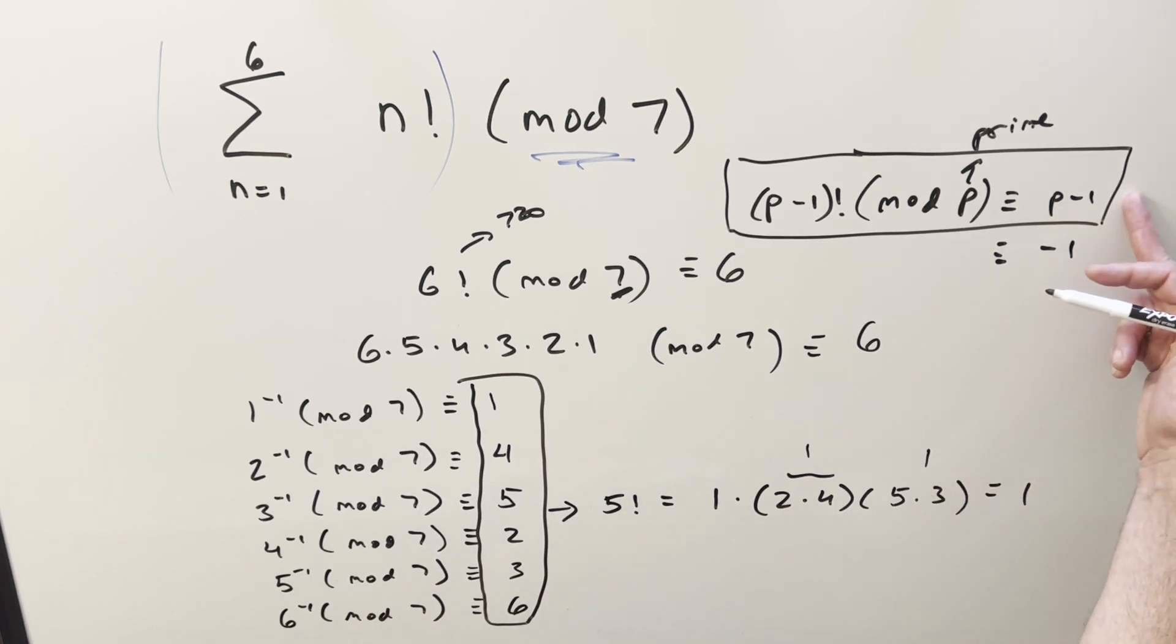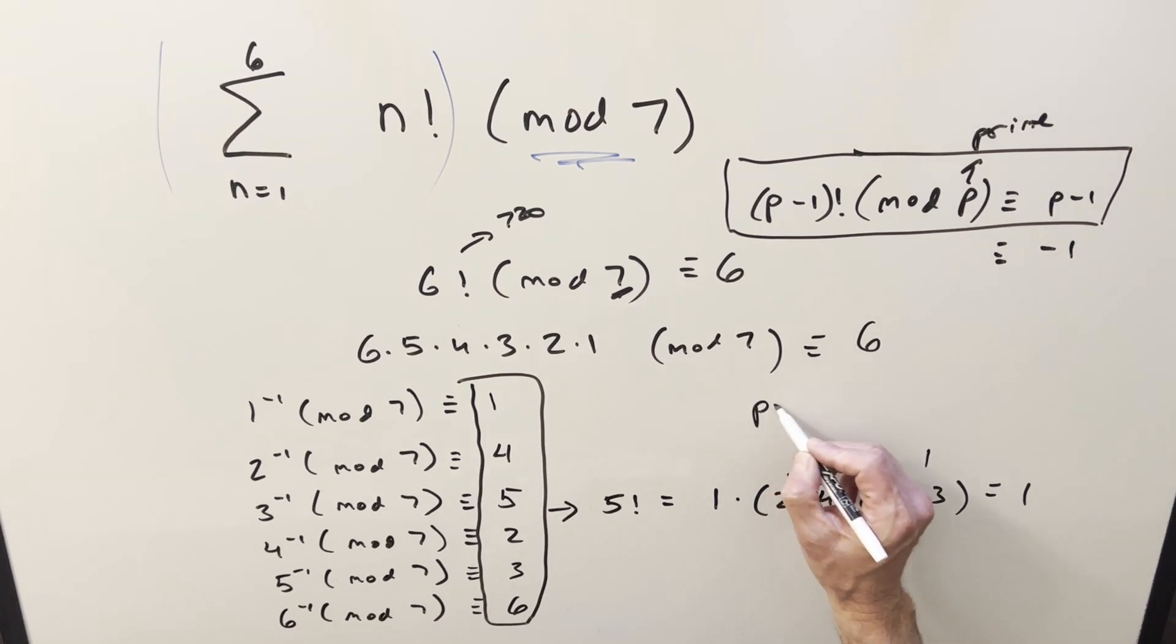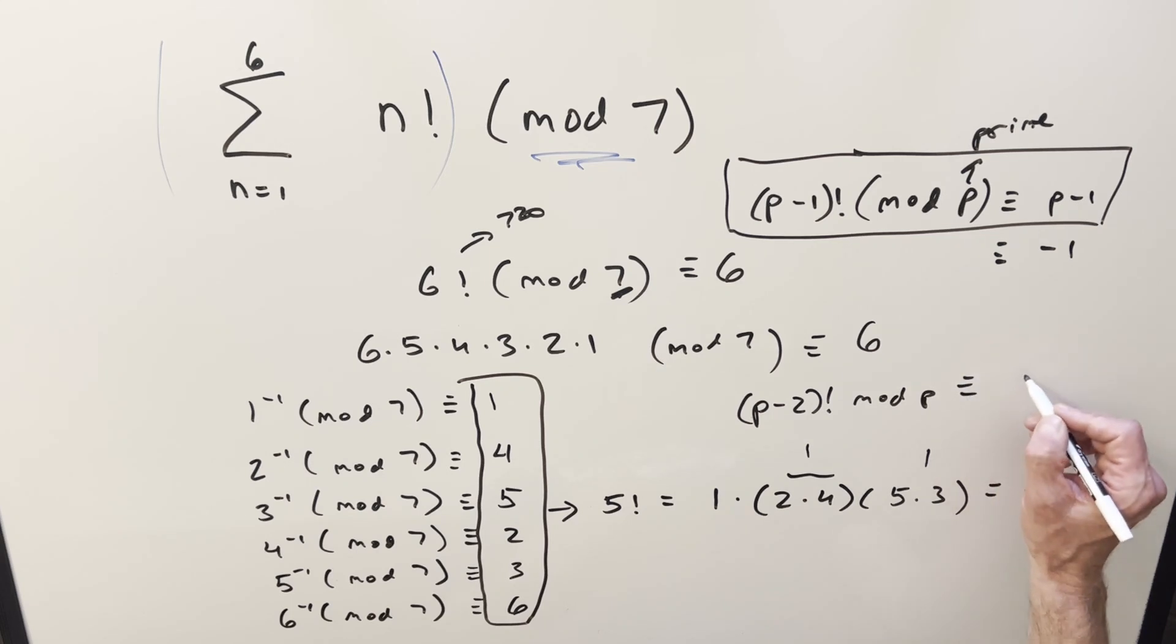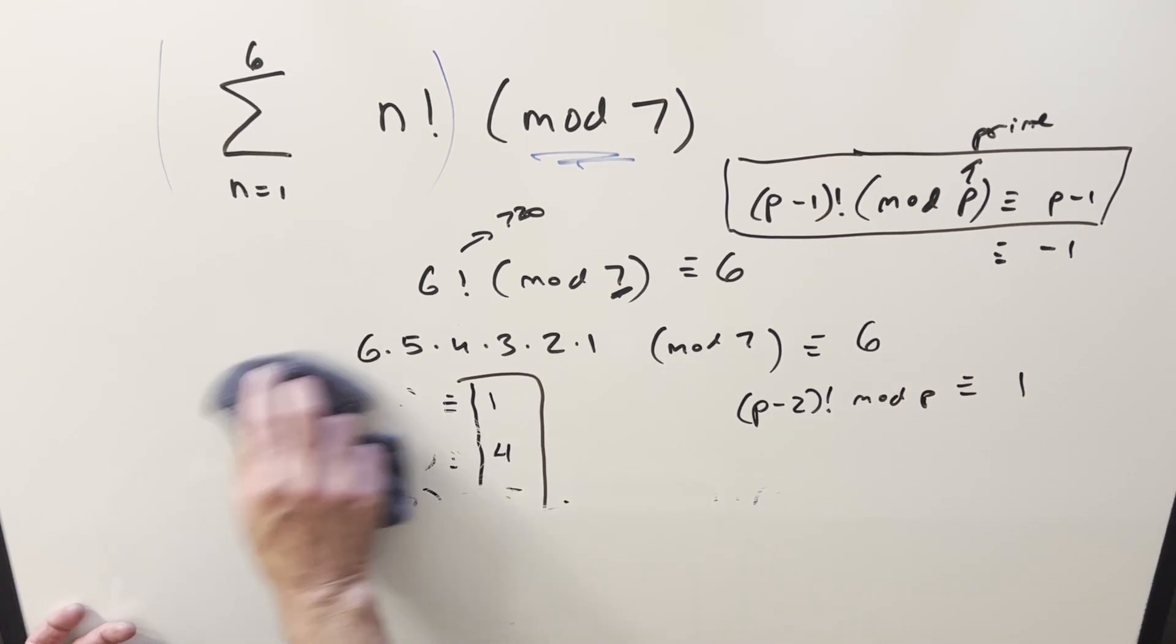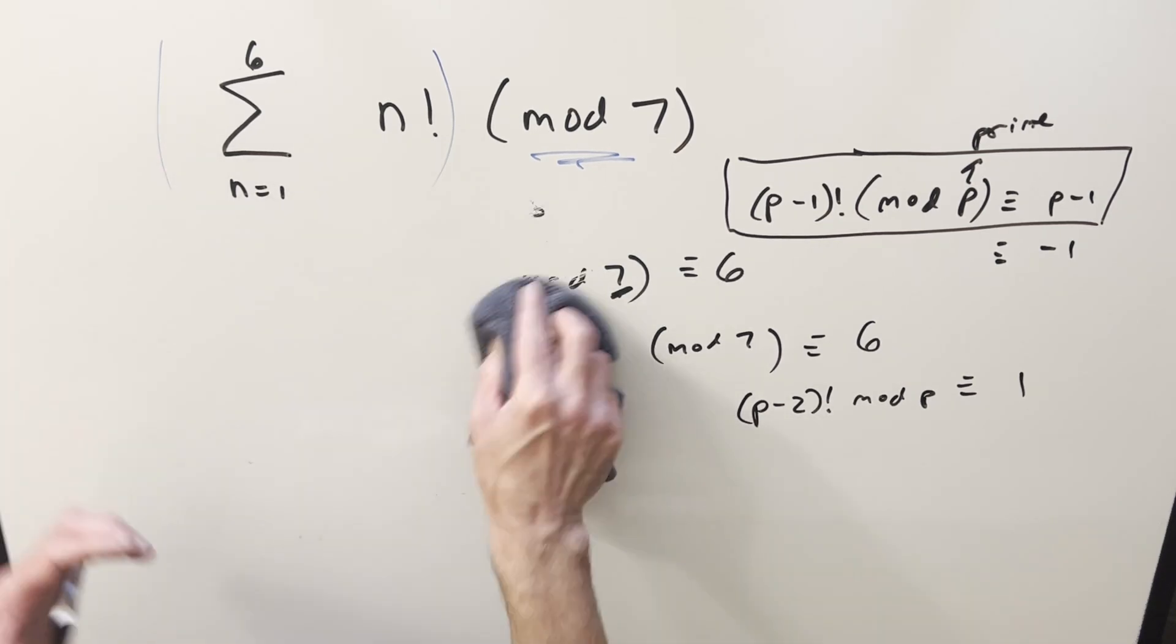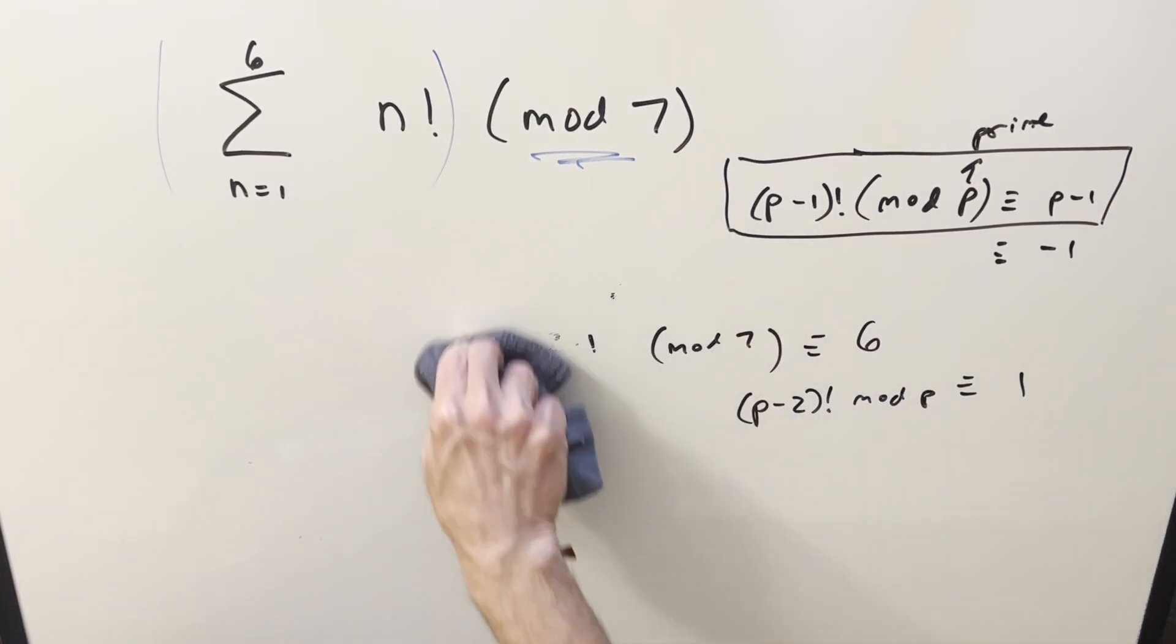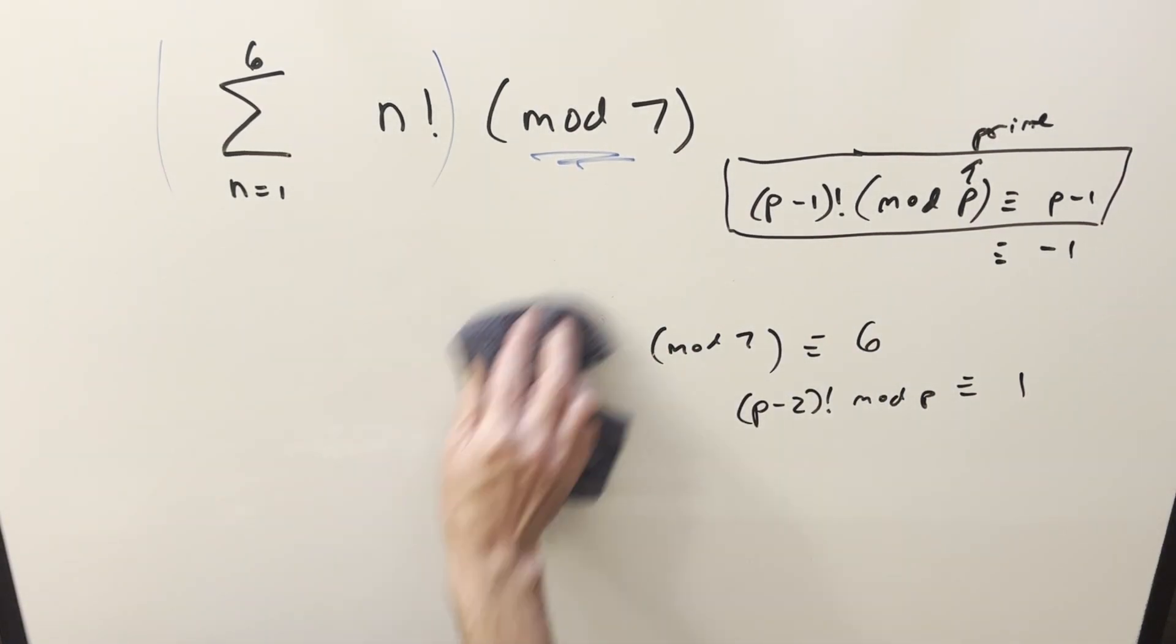So along with this statement of Wilson's theorem we also have for p minus 2 factorial mod p this thing is always going to be congruent to 1. And so with Wilson's theorem we really have everything we need to finish this off so let's just sum this out we only have 6 terms and we know we just calculated the 2 hardest ones or the 2 biggest numbers.